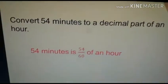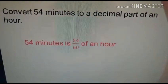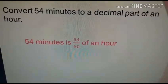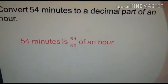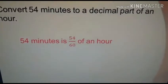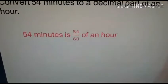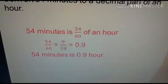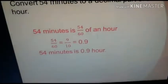Same like this. Convert 54 minutes to a decimal part of an hour. 54 minutes is 54 over 60 of an hour. We want to make it in simplest form. 54 and 60 are multiples of 6, so we can divide both numbers by 6. 54 over 60 is same as 9 over 10. The decimal is 0.9, so 54 minutes is 0.9 hour.